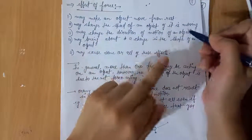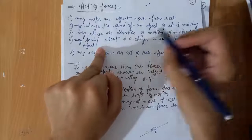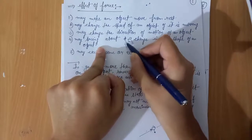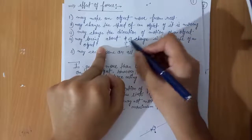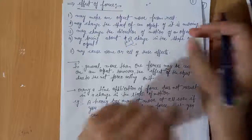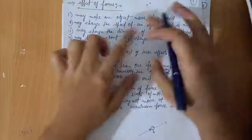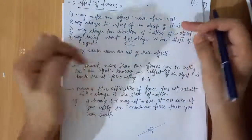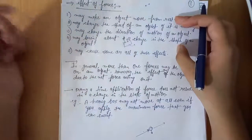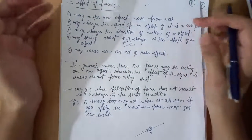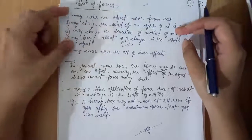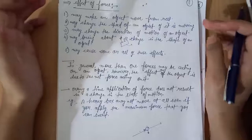Next, force may bring about a change in the shape of an object. This is a sponge piece — if we apply a force on this sponge, the shape of this sponge will get changed. Force may cause some or all of these effects. If we apply a force on an object, it may be possible that all four effects will be shown on that object, or maybe only a few of these effects.